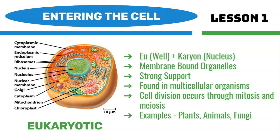Eukaryotic cells also have membrane-bounded organelles — the mitochondria, cytoplasm, Golgi body, endoplasmic reticulum, cytoplasmic membrane, and ribosomes. Eukaryotic cells are only found in multicellular organisms. According to the cell theory, every multicellular organism comes from pre-existing cells. In a eukaryotic cell, cell division occurs through a process known as mitosis or meiosis. Some examples of eukaryotic cells are plants, animals, and fungi.